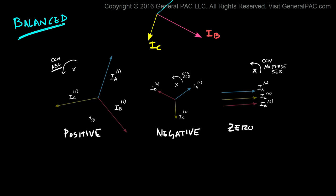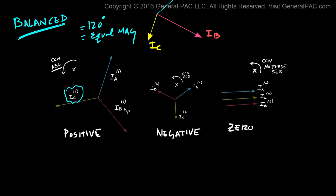Here's how they fit. Notice that the positive sequence and negative sequence components are both balanced — that's the key term. Which means for the positive sequence component, all 3 phasors are displaced by 120 degrees and they are equal magnitudes. So if we wanted to represent IC and IB with respect to IA, all we would need to do is rotate IA either 120 degrees or 240 degrees to make it equal either IC or IB.